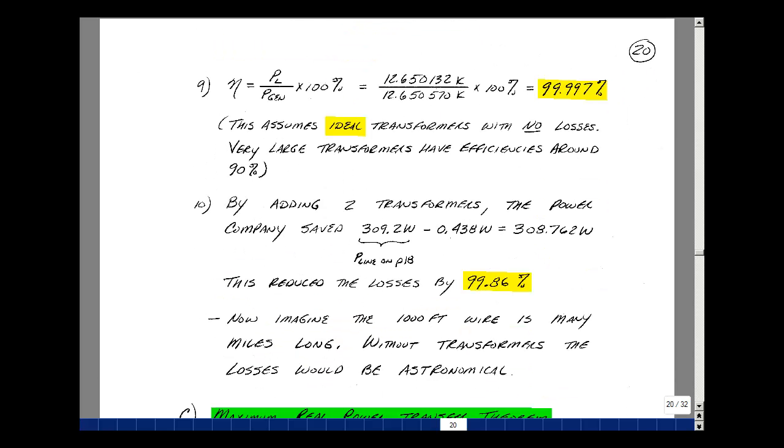Let's now calculate the efficiency of transmission as the real power to load over the real power generated. And now that's 99.997%. I did assume that the transformer was ideal here with no losses, but very large transformers can have efficiencies in the order of 90%. We would still see a great improvement in